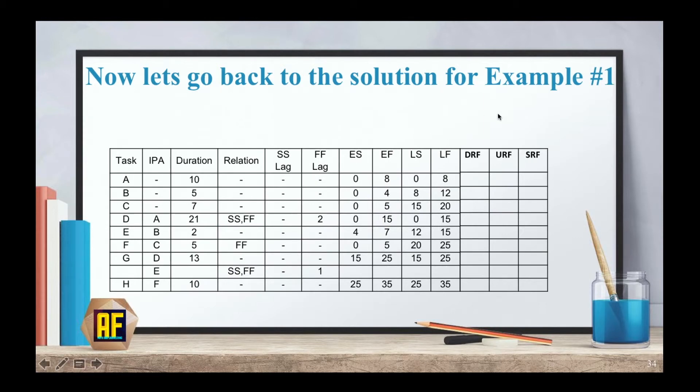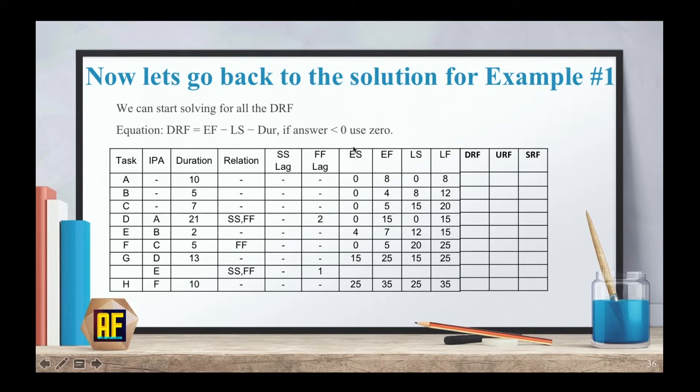So now let's go back to the solution for example one. We can start solving for all the DRFs. And again, here is our equation and you can start doing it on your own. We already solved for A. Now I want you to pause the video. Don't be lazy. Pause the video and start solving the DRF on your own and see that you are getting the correct answers.